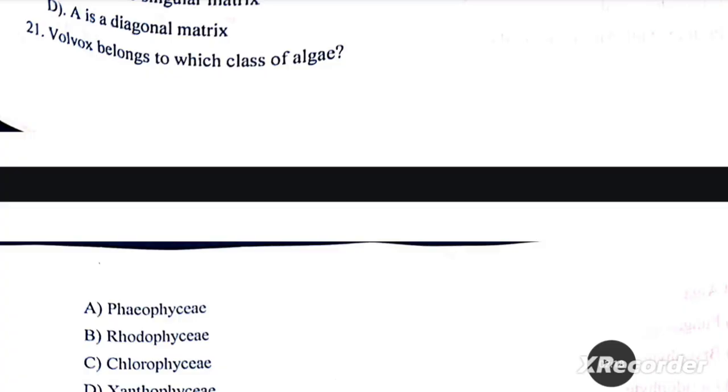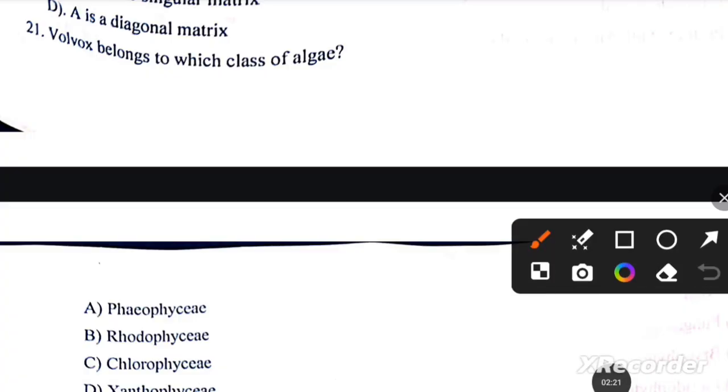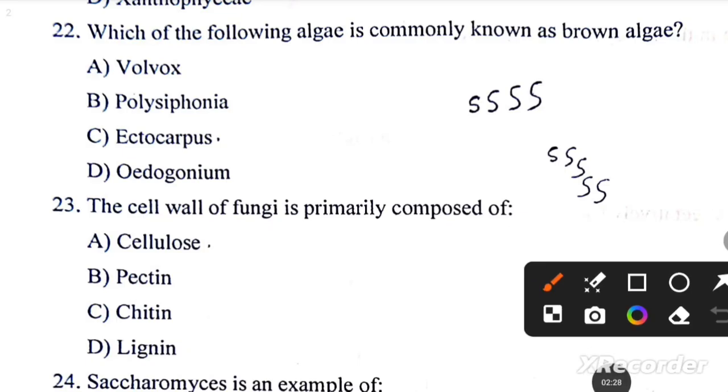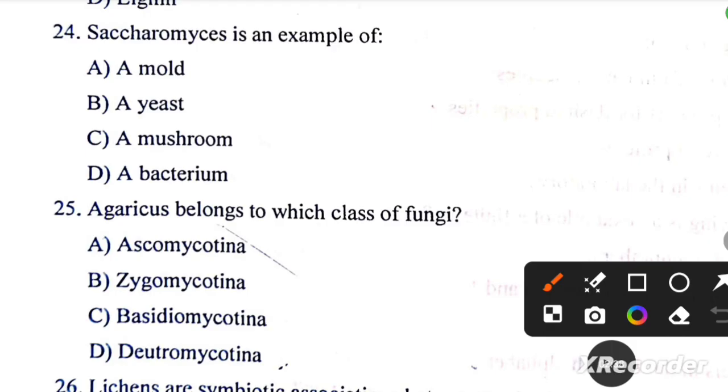Next question: Volvox belongs to which class of algae? The answer is option C. Which of the following is known as brown algae? Ectocarpus. The cell wall of fungi is primarily composed of chitin. Saccharomyces is an example of a yeast.